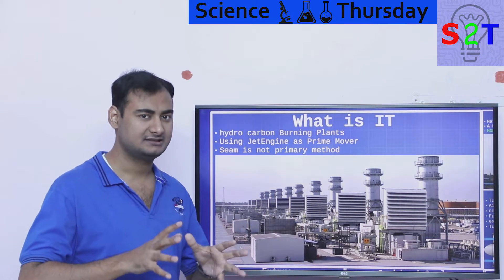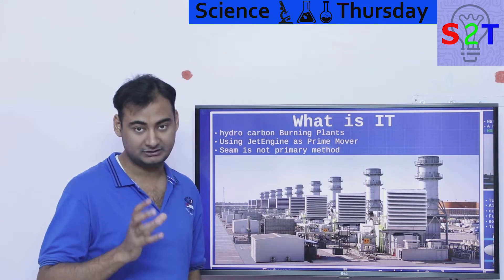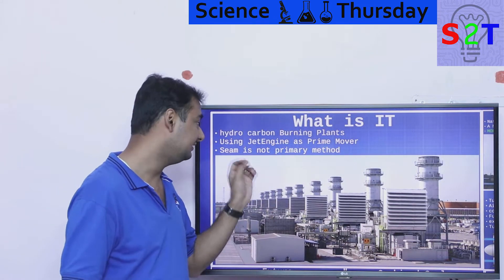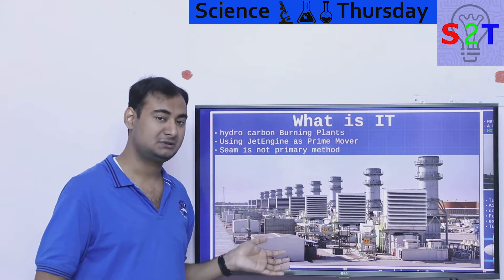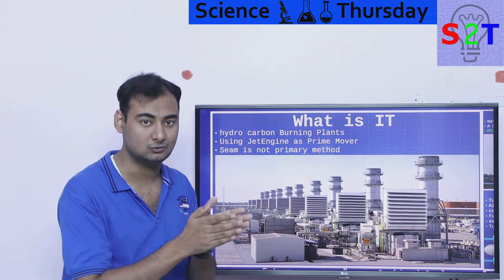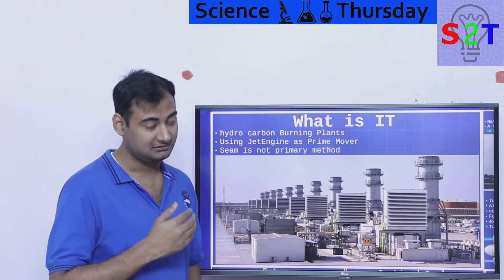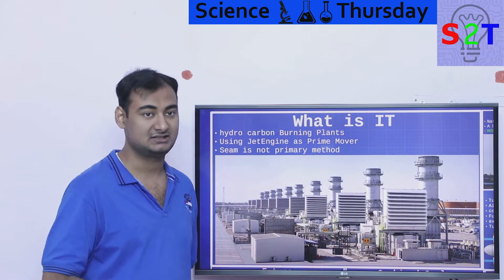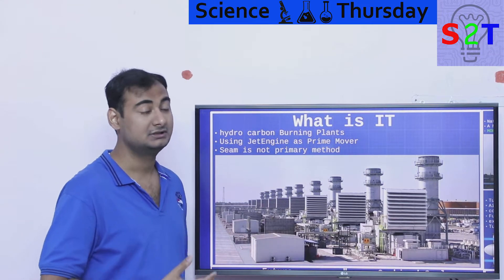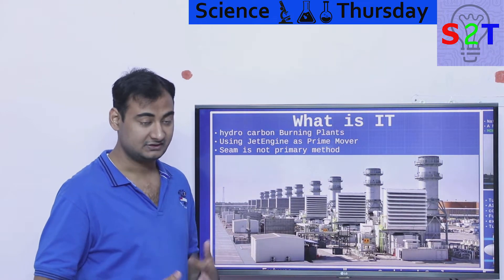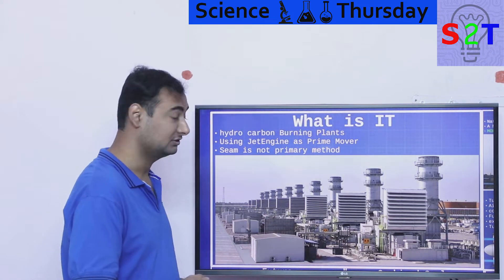You can generalize it where it's a hydrocarbon system and as a prime mover which is the thing that drives the generator, it is using a jet engine. A flat out normal jet engine, modified for this application. The jet engine is the core and it does not require steam as a primary method. You can add steam to it, but if you are in a water stranded place like Dubai, these sort of power plants make a lot of sense because you burn a lot and get a lot of electricity without having a river diverted. Coal power drinks water like there is no tomorrow.